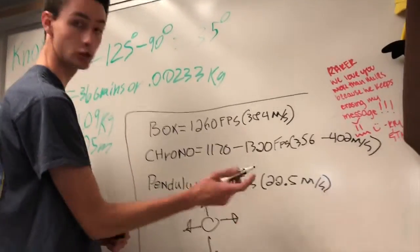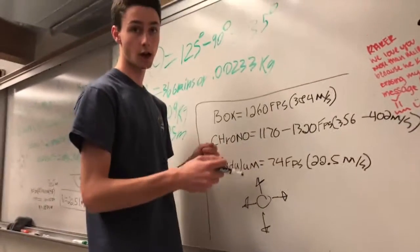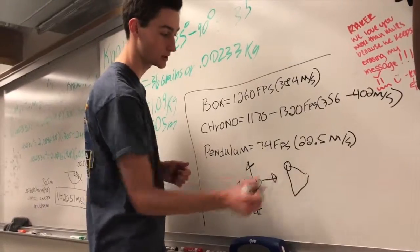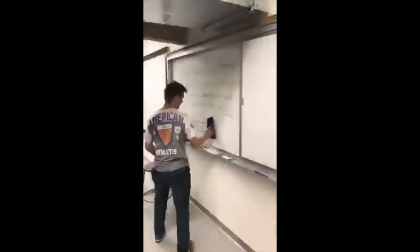Additionally the hinge, like Colton was saying at the top, creates a lot of friction. And so our change in height is less because of the friction at the top of the hinge.